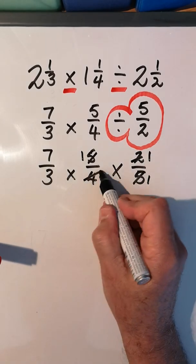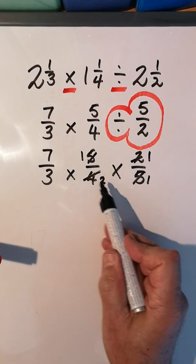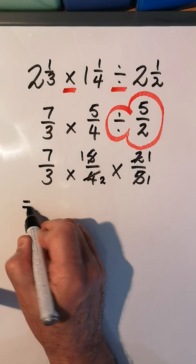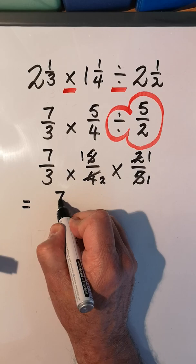So we can start getting towards our answer now. 7 × 1 × 1 = 7. 3 × 2 × 1 = 6. And that's my answer? Nope, definitely not. It is top-heavy; we need to simplify it.